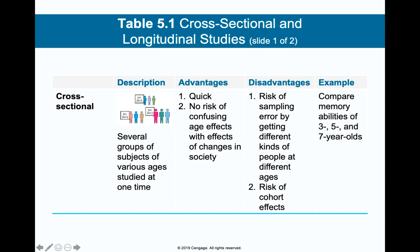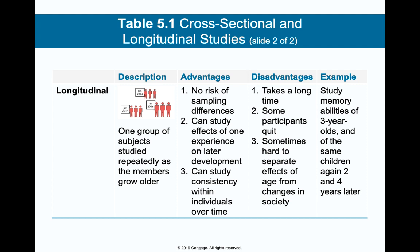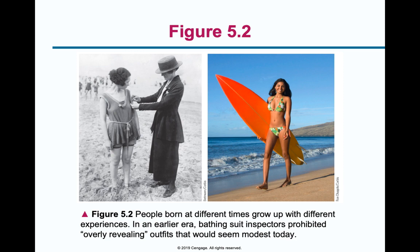A cross-sectional design is where you do the whole study simultaneously — you can include many different age groups, races, religions, ethnicities, and sexes all at the same time. A longitudinal study is where you take the same group and gather information from them at different stages — for example, studying someone at age 5, then 10, then 15, then 20. This gives a better sense of how they're developing across the lifespan.